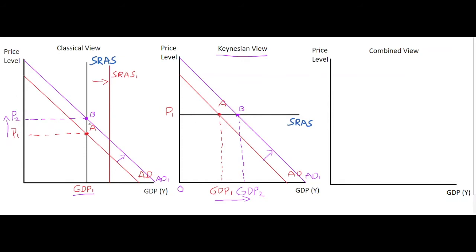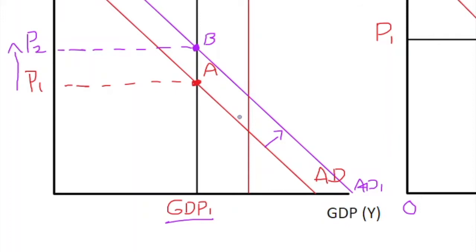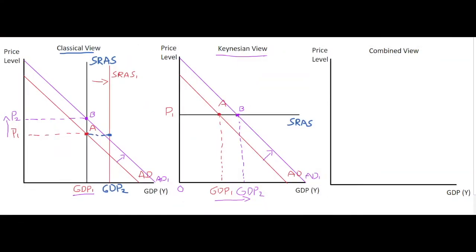This would shift the short-run and long-run aggregate supply curves rightwards. At the initial aggregate demand level, this would cause the economy to increase in terms of output. So supply-side measures are what the classical view advocates.